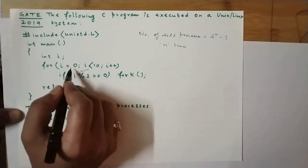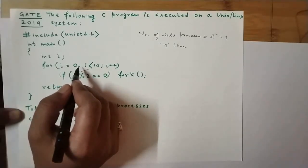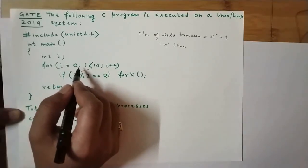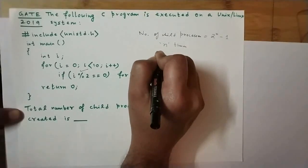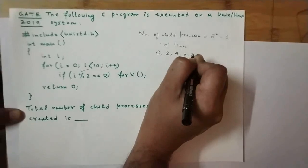How many even numbers do we have from 0 to 9? We have exactly 5 even numbers: 0, 2, 4, 6, and 8.